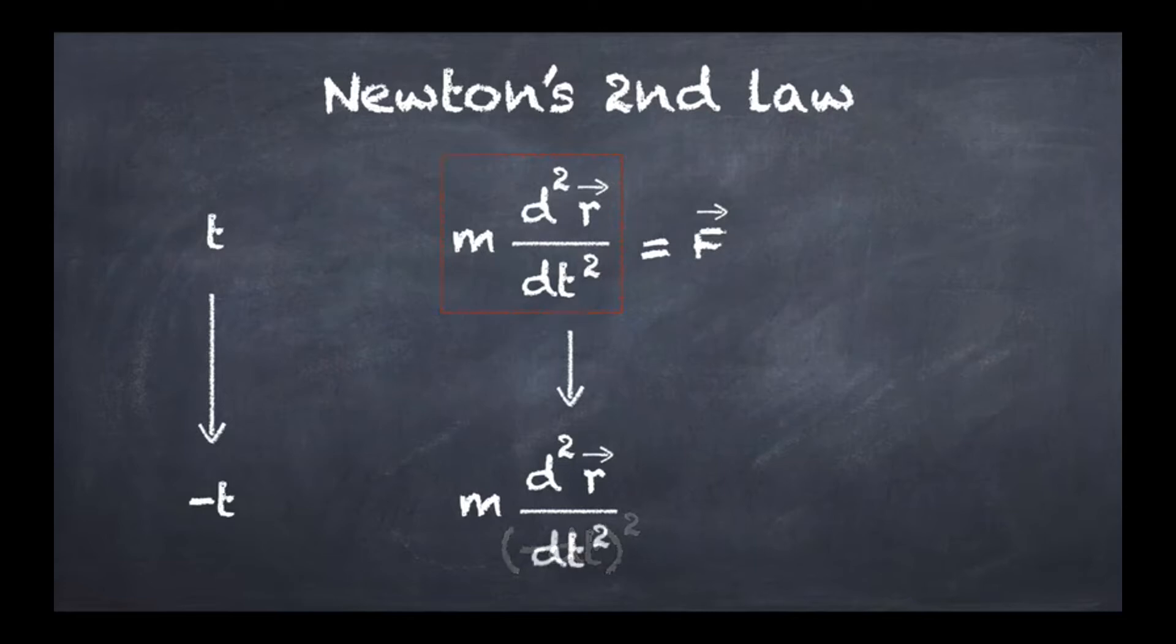We're going to get in the end m times the second derivative of r with respect to time, with respect to this new inverted time. So we see here that the actual shape of the left-hand side is totally unchanged by this time reversal transformation.